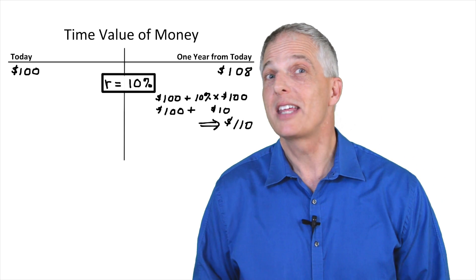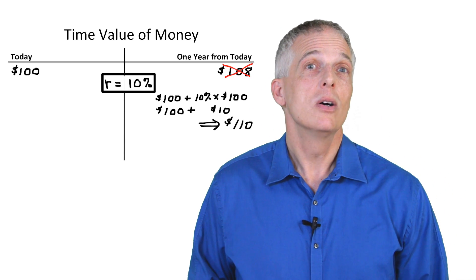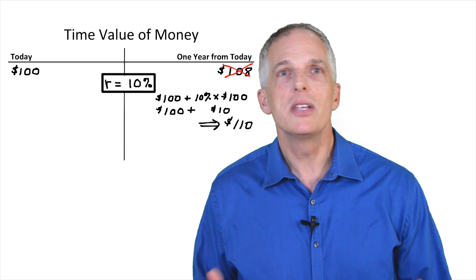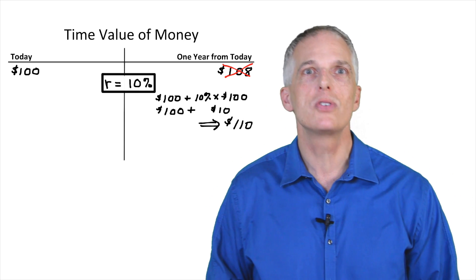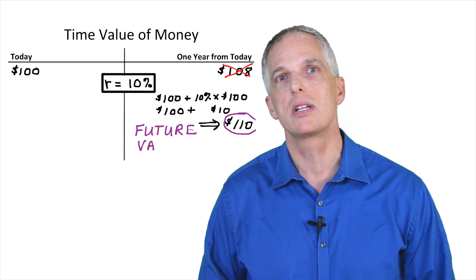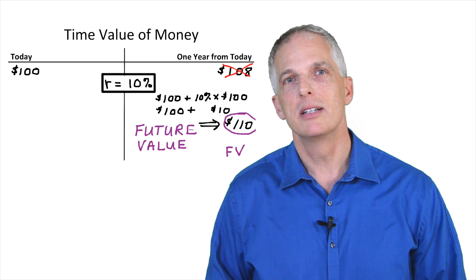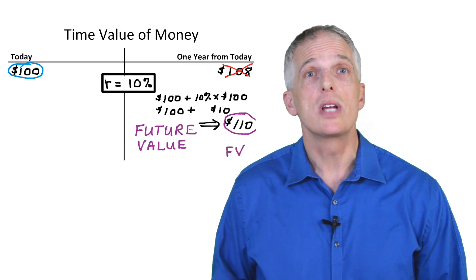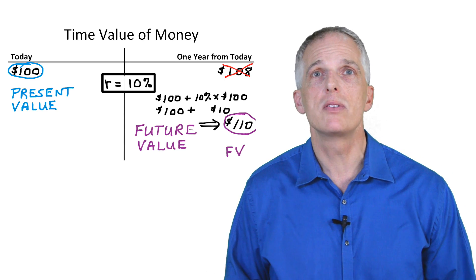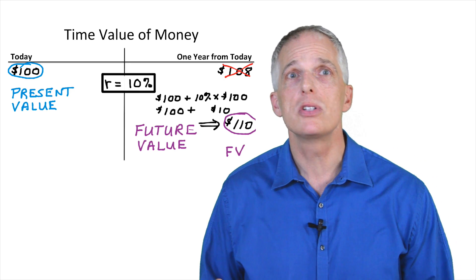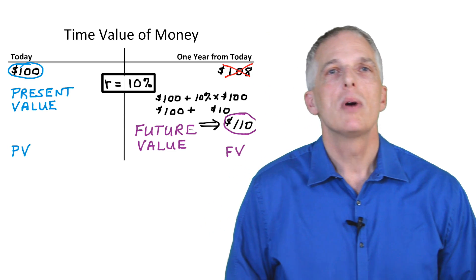It should now be obvious that I would not choose the $108 in one year. Why? Because I can take the $100 today, invest it at 10%, and have $110 in one year. In this example, the $110 is referred to as the future value of $100 invested at an annual interest rate of 10% for one year. Future value is often abbreviated FV. The $100 we are offered today is referred to as the present value of $110 one year from today when interest rates are 10%. Present value is often denoted PV. While this example is simple, the basic idea of present and future values is crucial in understanding many financial decisions.